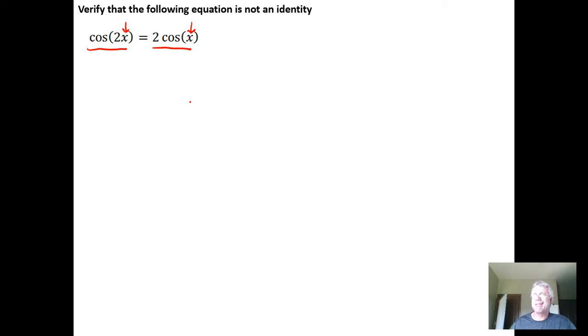So all you need to do to show that something isn't an identity is demonstrate that there is at least one value of x for which the two sides of the equation are not the same or do not generate the same results. For example, this one's very simple.